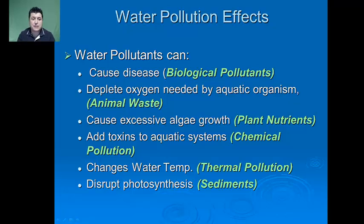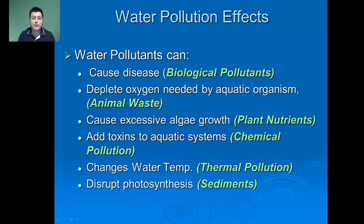Chemical pollutants can add toxins to aquatic ecosystems. Thermal pollution from coolant towers for coal and nuclear power plants releases hot water into the environment, disrupting the temperature of that ecosystem and damaging life. Sediment erosion — excess sediment from fast-moving surface water — gets into waterways and blocks sunlight from penetrating the water, decreasing photosynthesis.